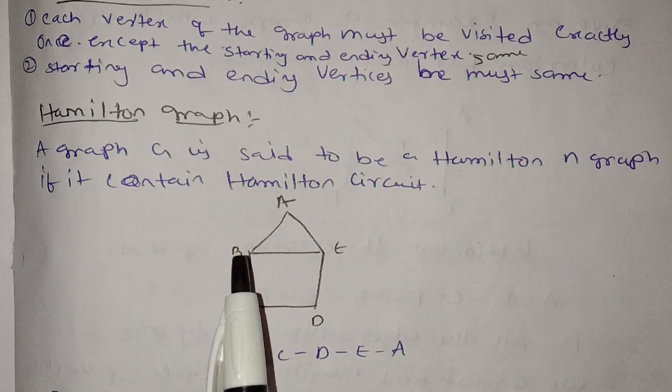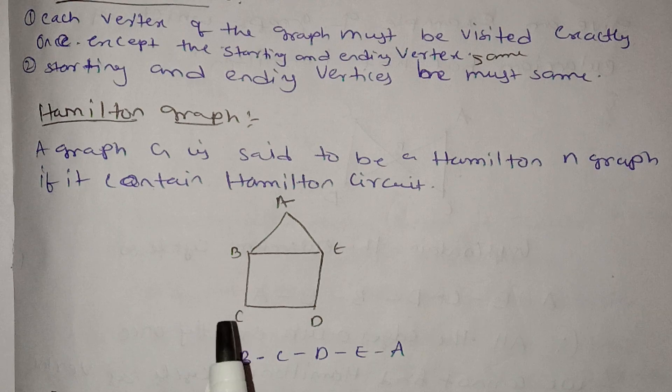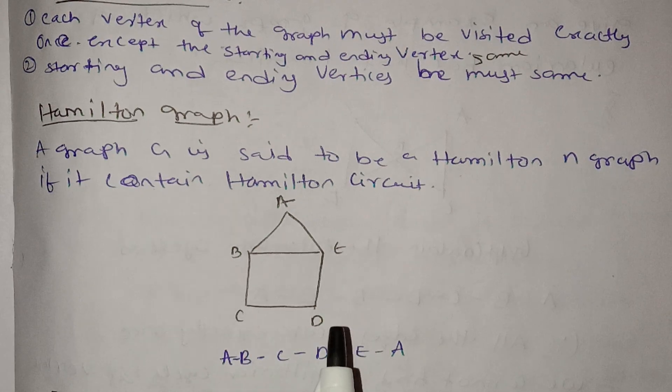For the Hamilton circuit example, we have vertices A, B, C, D. The Hamilton circuit visits each vertex exactly once and returns to the starting vertex.